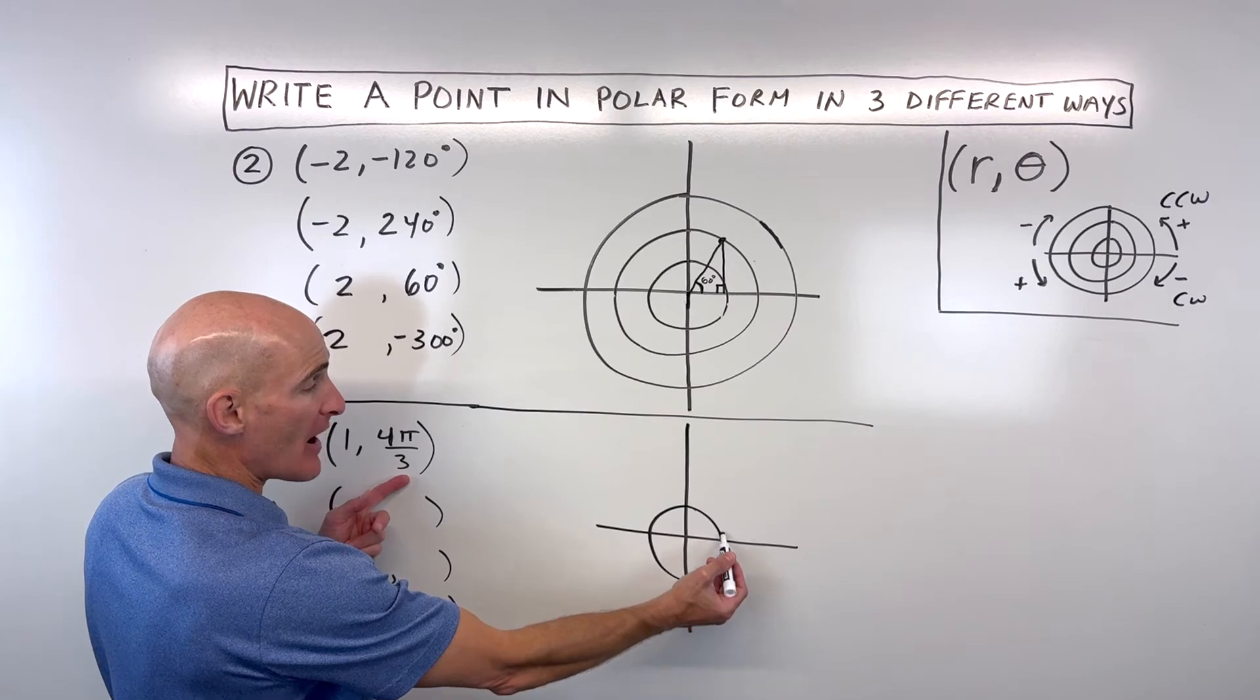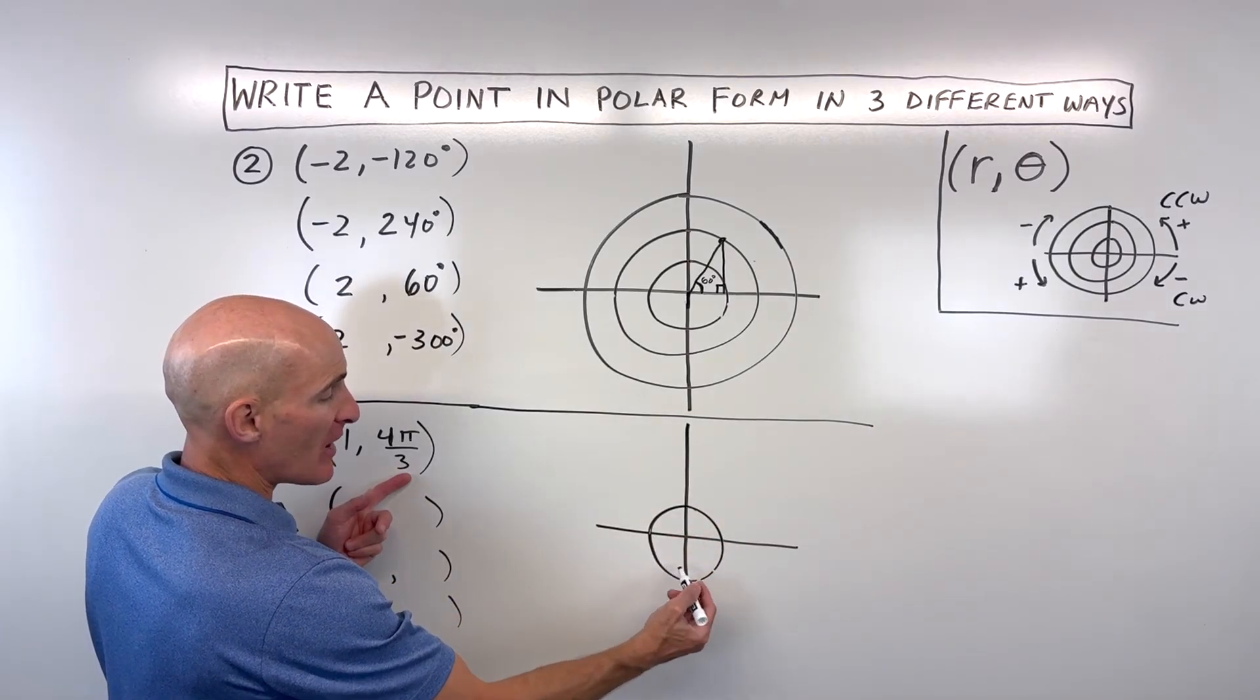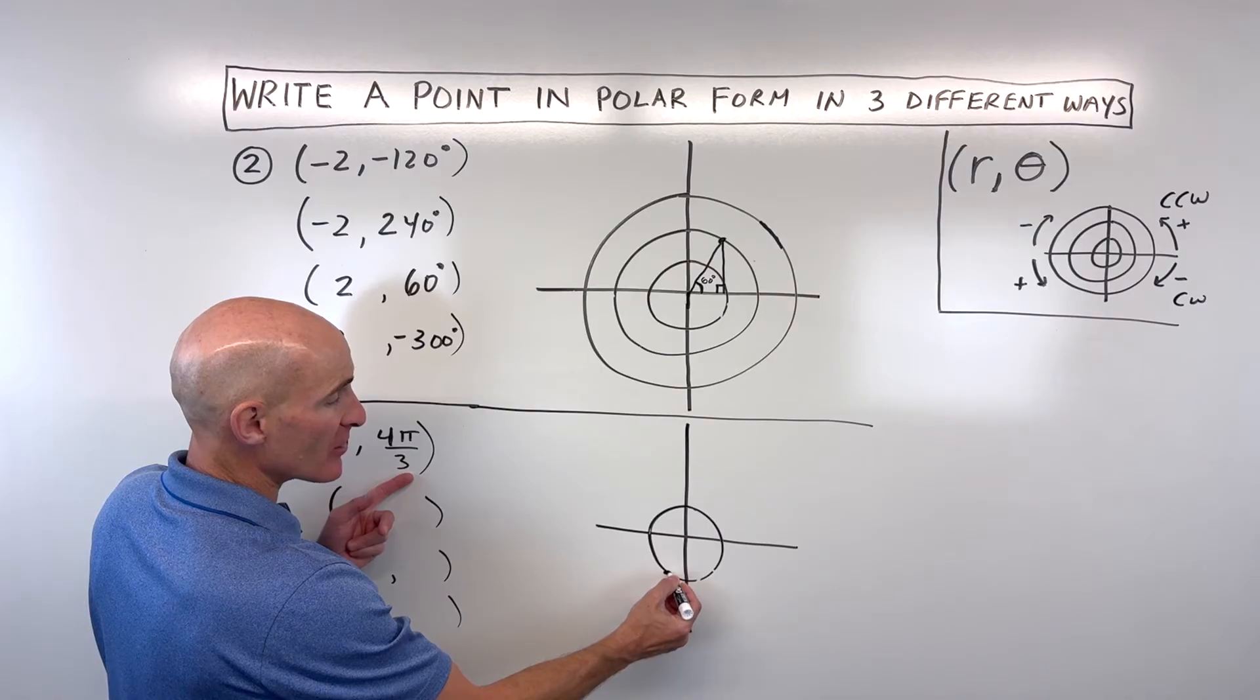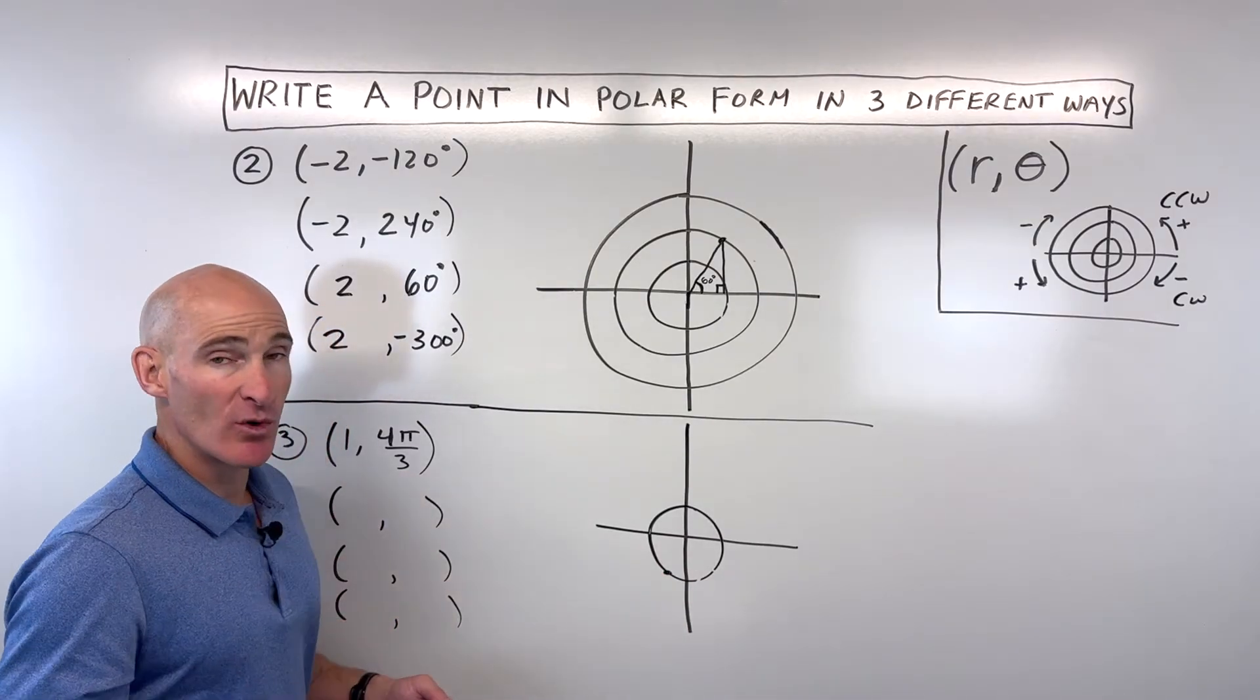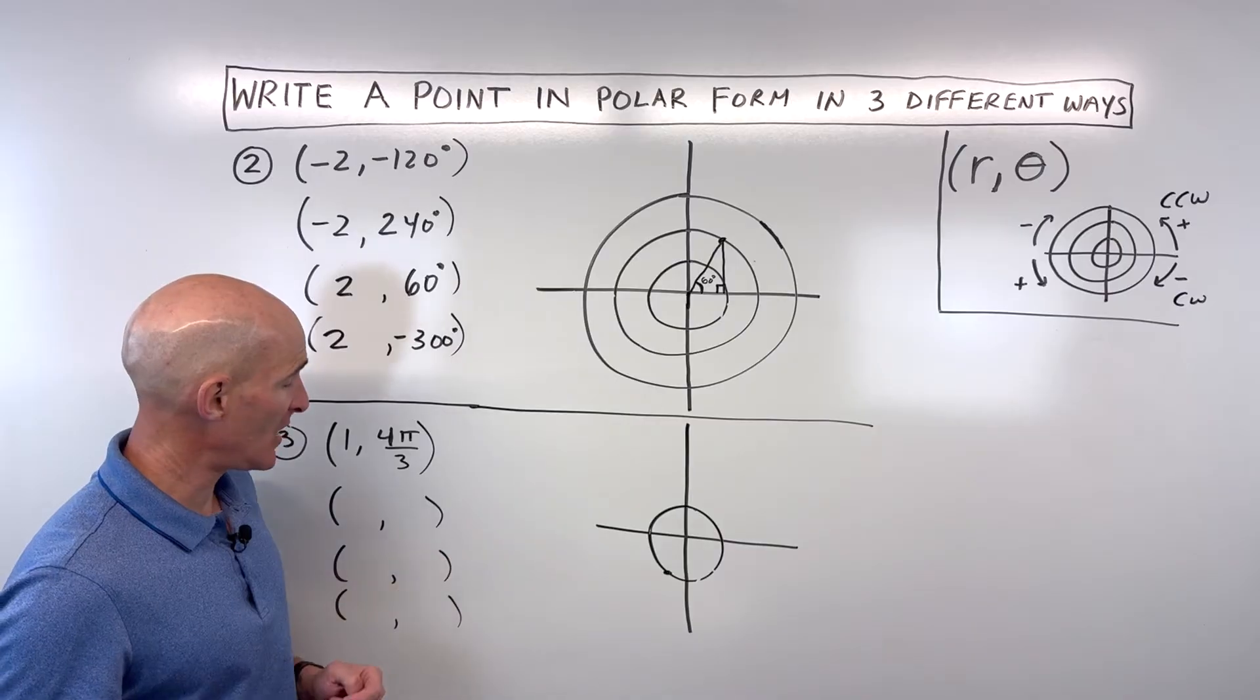So one pi is 180. A third of pi puts us right here. That's our location. We want to find three other representations for this location.